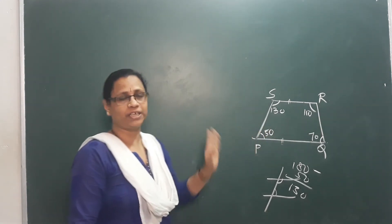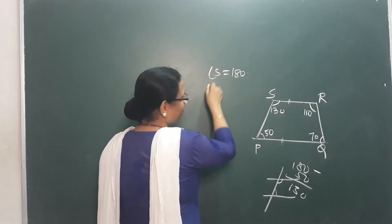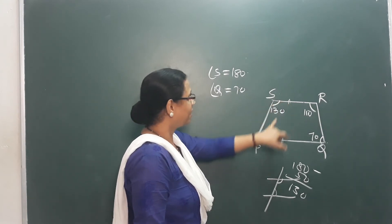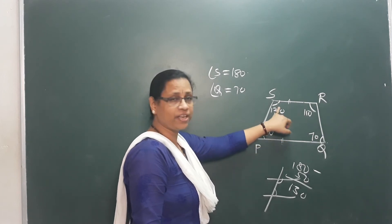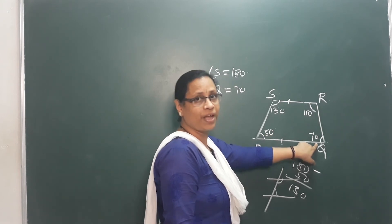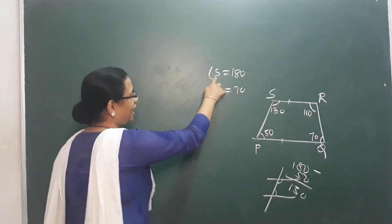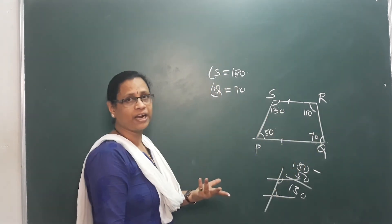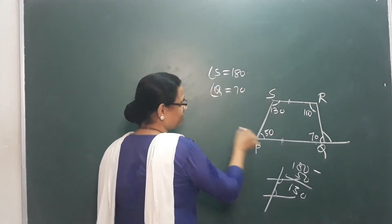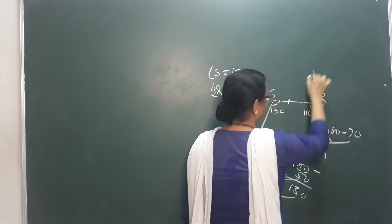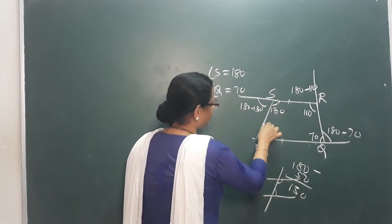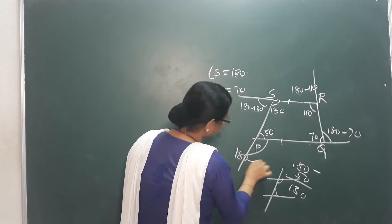So angle S equals 130 degrees and angle Q equals 70 degrees. This is because angle P and angle S are co-interior angles and are supplementary. Similarly, angle R plus angle Q equals 180 — those interior angles are supplementary. To find the outer angles, we extend each side: outer angle A equals 180 minus 70, which is 110 degrees. Outer angle B equals 180 minus 110, which is 70 degrees. Outer angle C equals 180 minus 130, which is 50 degrees. Outer angle D equals 180 minus 50, which is 130 degrees.